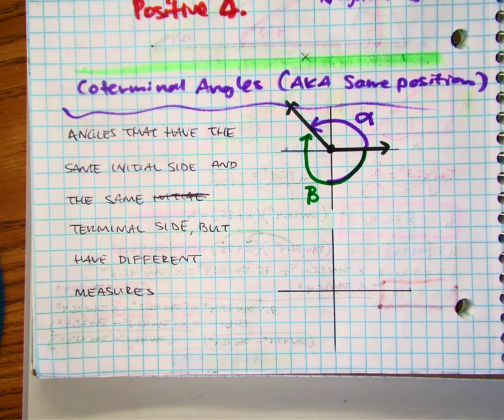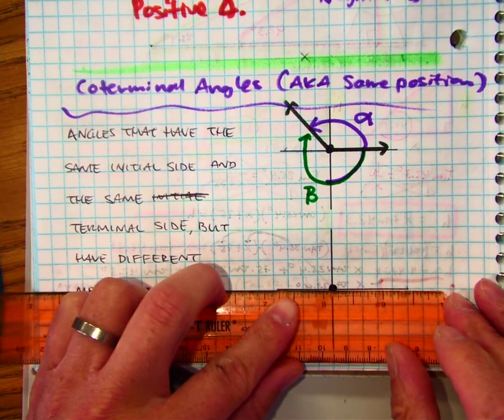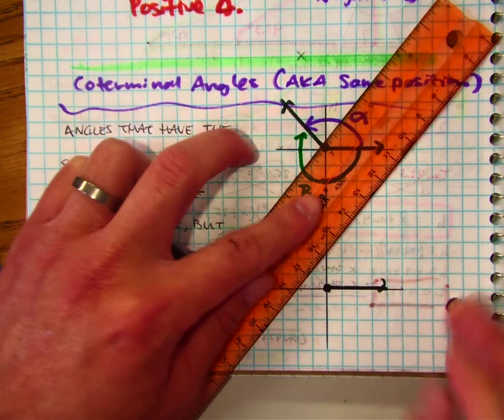Let's try another example. If I start down here on the initial side, standard position, let's just say I form an acute angle.